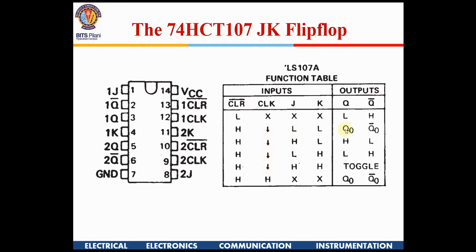This is a negative-edge-triggered flip-flop, as shown by the falling edges. For J=0, K=0 the output remains the same. For J=1, K=0 it goes to high state; J=0, K=1 it goes to low state. For J=1, K=1 it toggles. When there is no clock transition — clock is continuously high — nothing happens, because it is edge-triggered and the previous data remains.